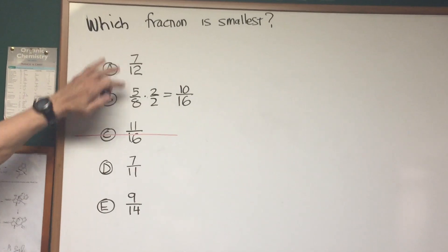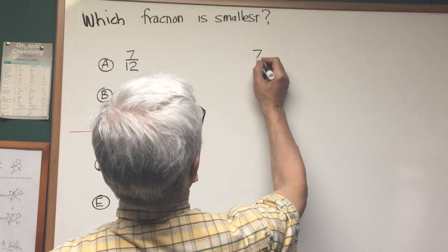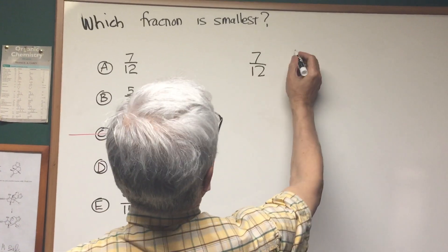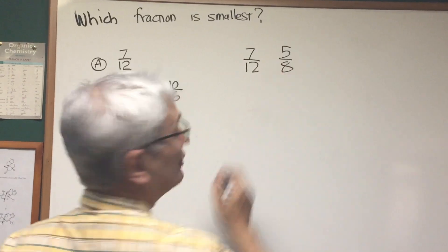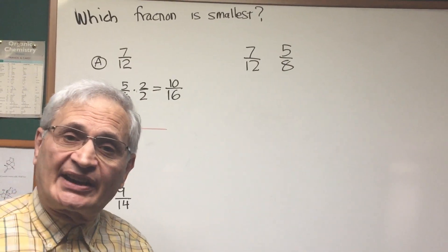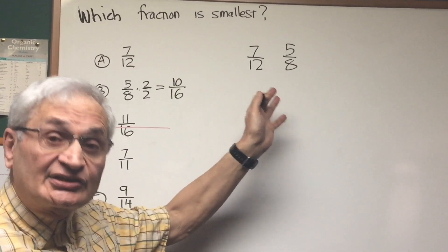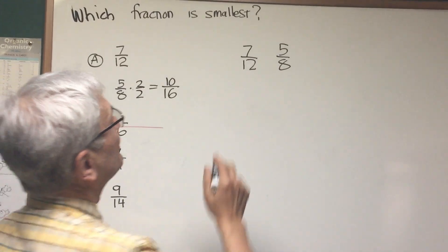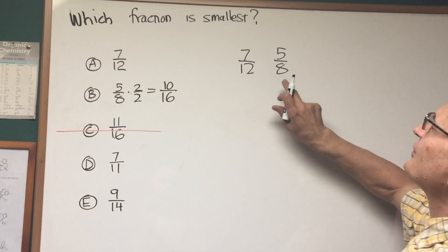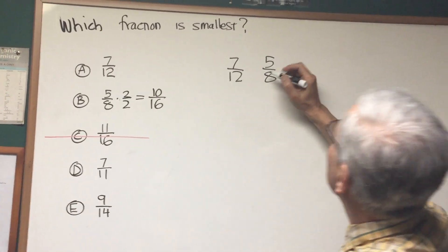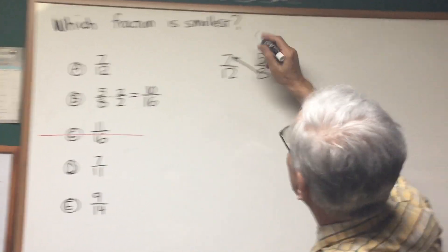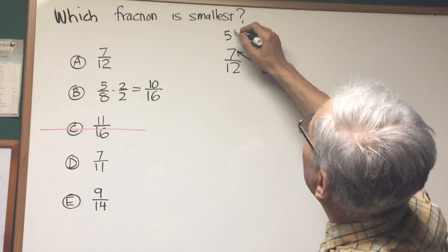Now let's look at 7 twelfths. Let's look at the first two. 7 twelfths and 5 eighths. Which one of these is larger? Here's a handy little technique. If the numbers are convenient and small enough, here's what you do to find out which fraction is smaller. Take the denominator of one fraction and multiply it by the numerator of the other. 8 times 7 is 56.